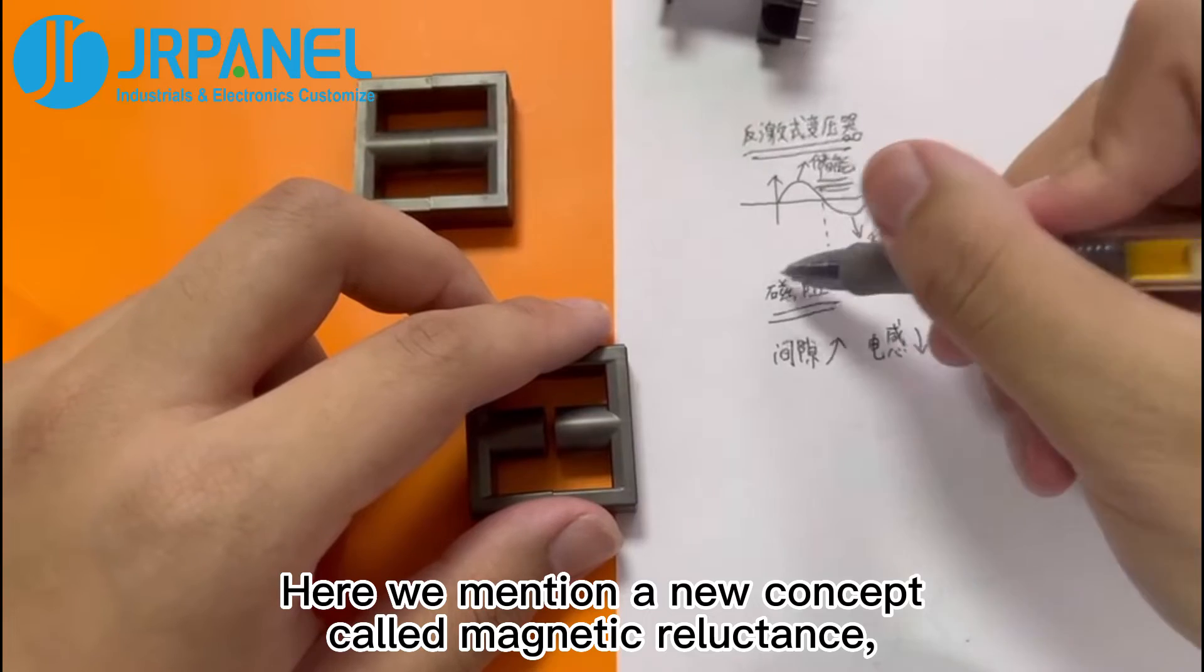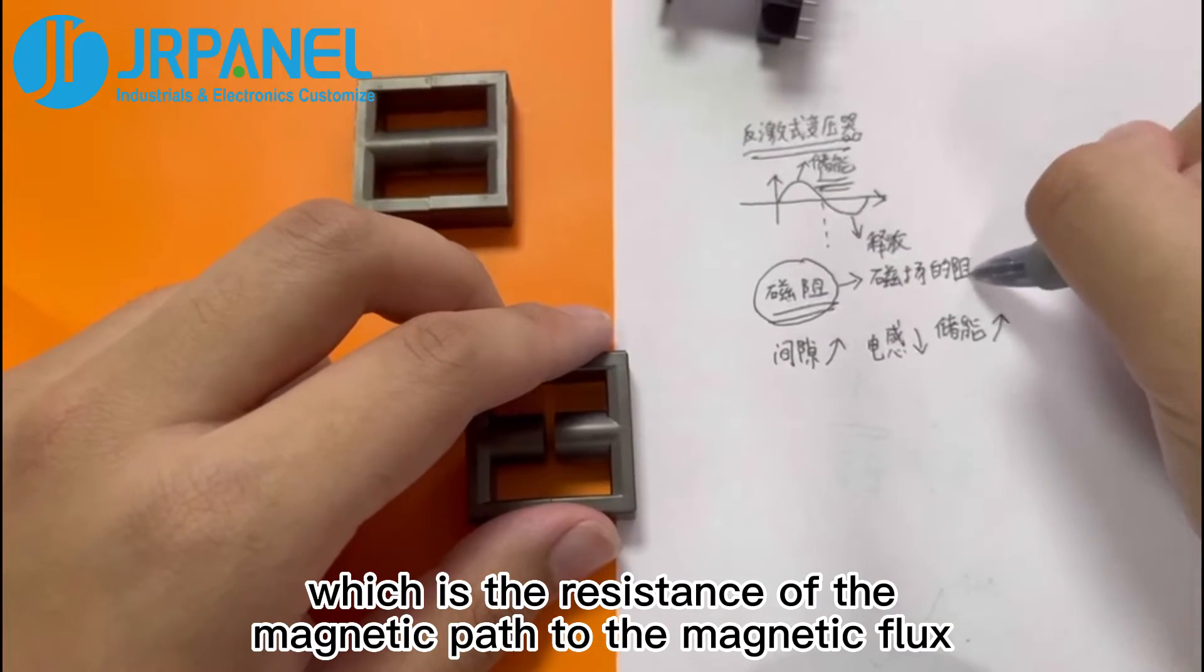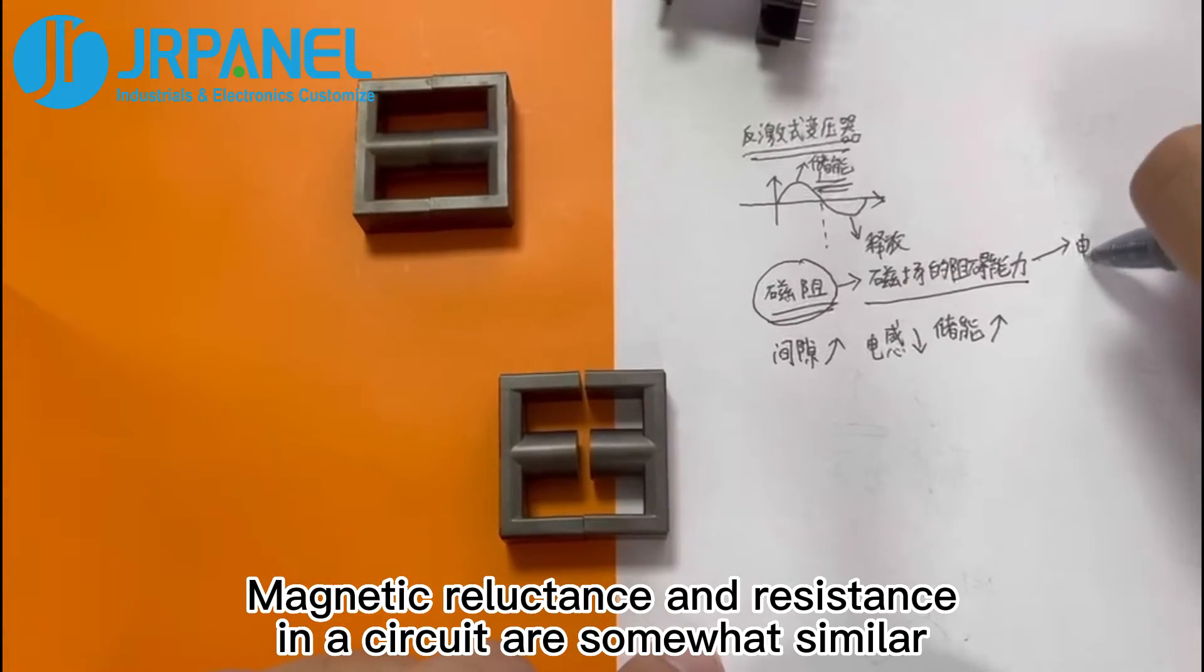Here we mention a new concept called magnetic reluctance, which is the resistance of the magnetic path to the magnetic flux. Magnetic reluctance and resistance in a circuit are somewhat similar.